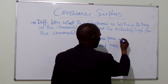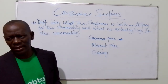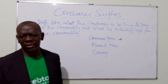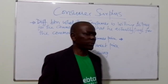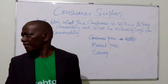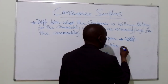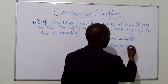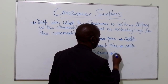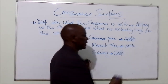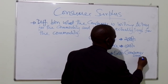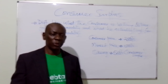Another example: you are very thirsty and if you can get a bottle of water you are ready to pay two thousand shillings. Two thousand is your consumer price — what you are willing to pay. But you find that the bottle of water is one thousand five hundred. You have saved five hundred shillings, and this is what we call the consumer surplus.